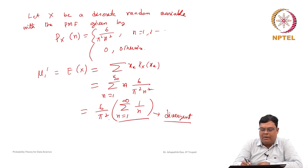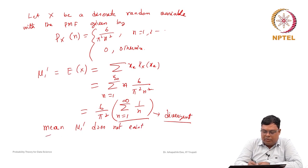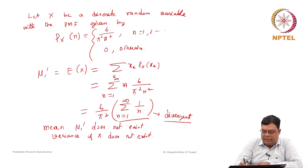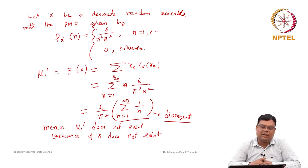Since the mean does not exist (the series diverges), the higher-order moments also will not exist, because computing μ₂' would involve Σ 1/n, and multiplying by n² or n³ only makes the divergence worse. Therefore, for this discrete random variable, the mean does not exist and, hence, the variance does not exist either.